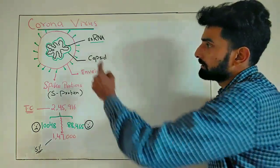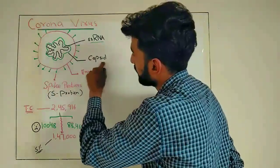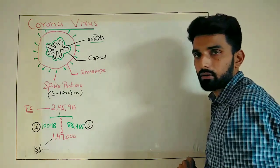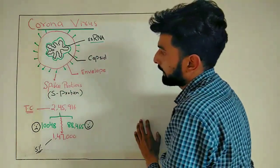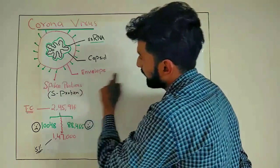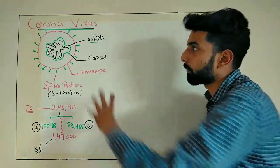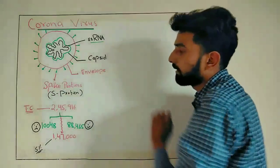This single-stranded RNA is coated with a protein, covered with a protein that is called capsid. And outside of the capsid, there is another protein that is called envelope protein.